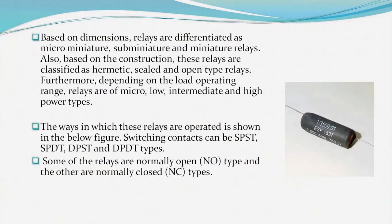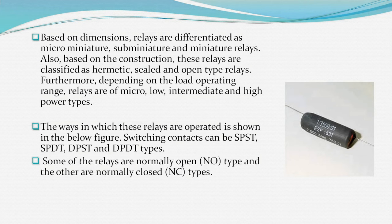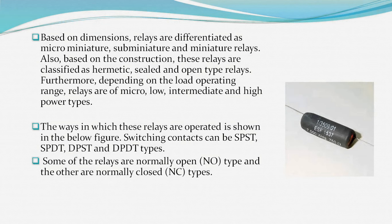Based on dimensions, relays are differentiated as micro, miniature, sub-miniature, and miniature relays. Based on construction, they are classified as hermetically sealed and open type relays. Furthermore, depending on the load operating range, relays are of micro, low, intermediate, and high power types, as shown in the figure.